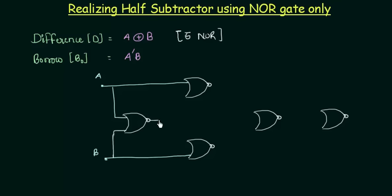The output of the first NOR gate goes as the second input to both this NOR gate and this NOR gate. The output of this NOR gate goes as one input here, and the output of this NOR gate goes as the other input to this gate.